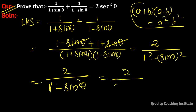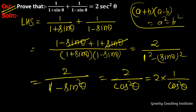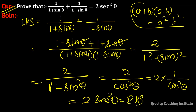This is equal to 2/cos²θ, which equals 2·(1/cos²θ), and 1/cos²θ is sec²θ. So this equals 2sec²θ = RHS. Hence proved.